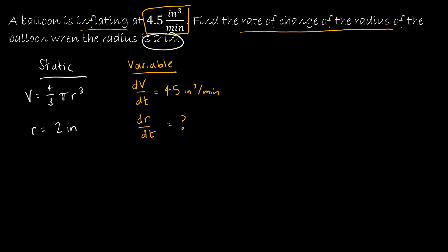From here, I'm going to take the static formula. V = 4/3 π r³. And I'm going to differentiate everything with respect to time. So the derivative of V is 1, dV dt.